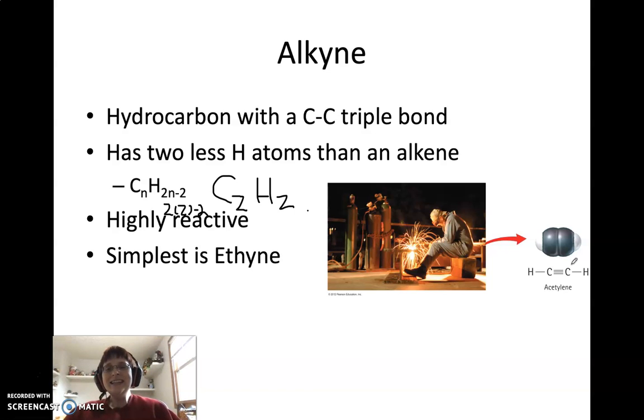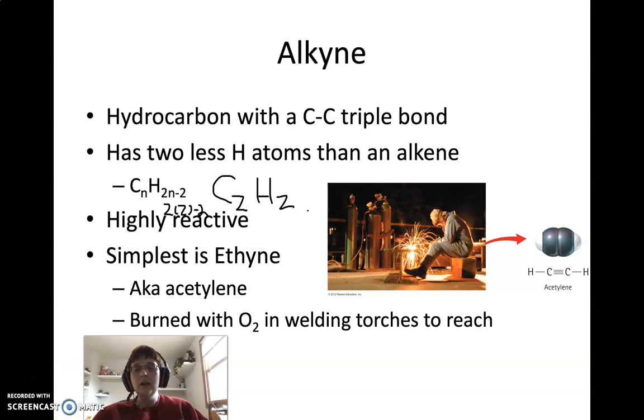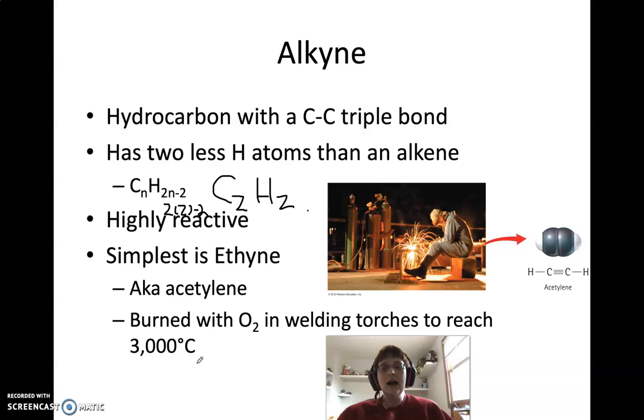The simplest alkyne is ethyne. You actually don't know it by that name. You know it by this name, acetylene. Acetylene is what you see being used here. It's most commonly used in welding, and this is showing off its high reactivity. You use it with oxygen, ignite it, and you get super high heat. And that is actually it reacting with the oxygen in the air and recombining so that these bonds break and reform into new molecules and compounds. So if you do burn it in welding torches, you get temperatures, like I said, highly reactive, up to 3,000 degrees Celsius. So very, very reactive group in the alkynes.